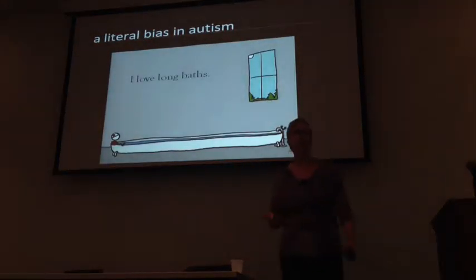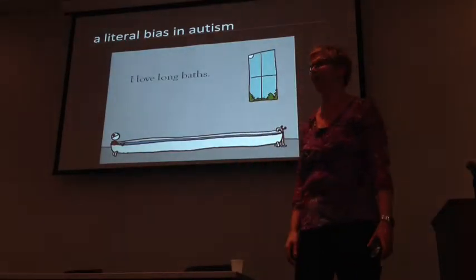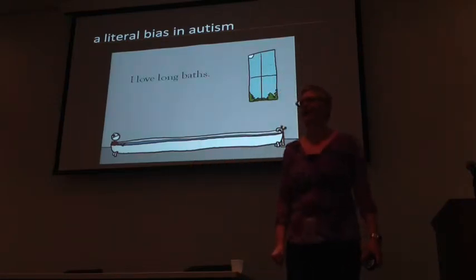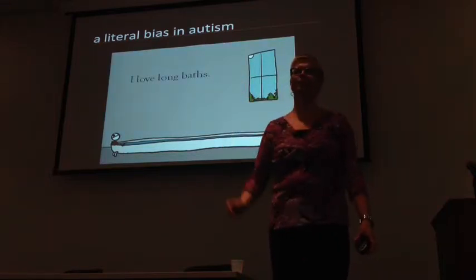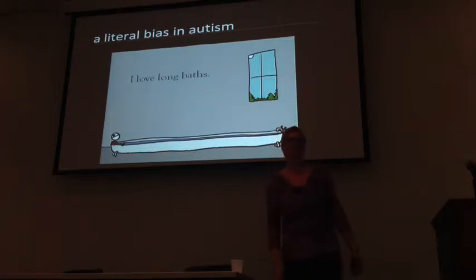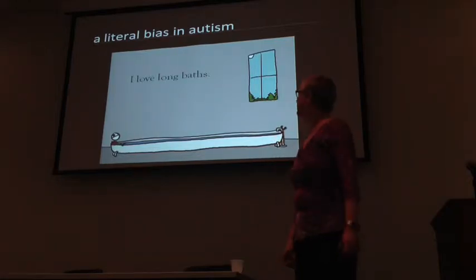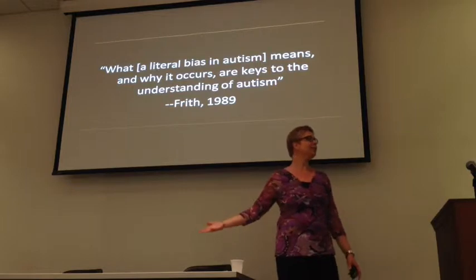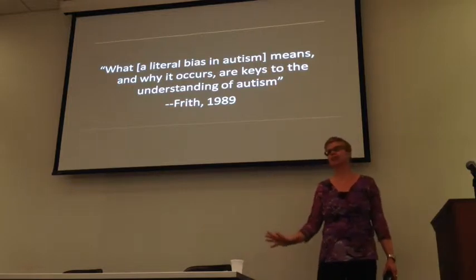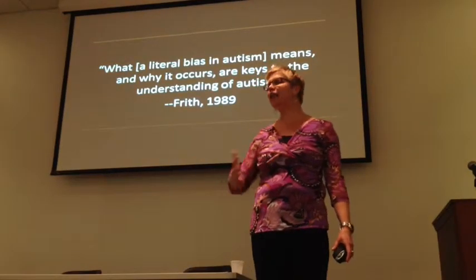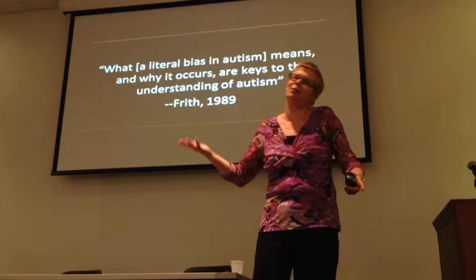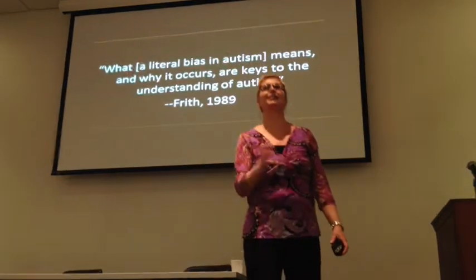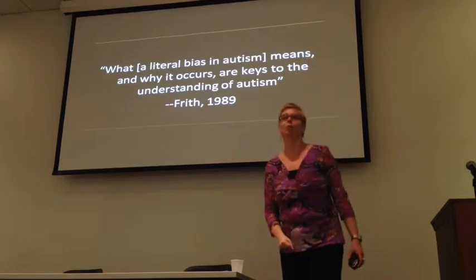It seems we could say there's a literal bias in autism. If you say 'I love long baths,' you don't mean a literally stretched-out bathtub — but a person on the autism spectrum might get a little confused about that. Uta Frith, back in 1989, made the claim: 'What a literal bias in autism means and why it occurs are keys to the understanding of autism.' That's probably a little overstated, but it's very interesting to think about what cognitive processes lead to that.